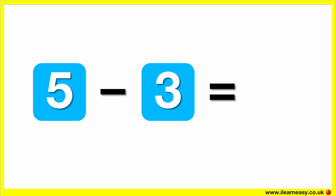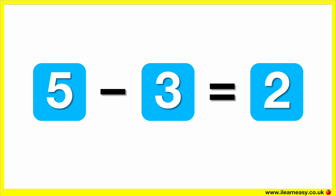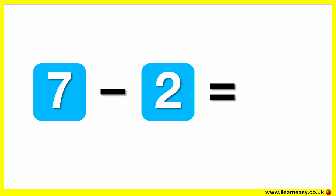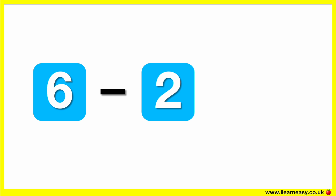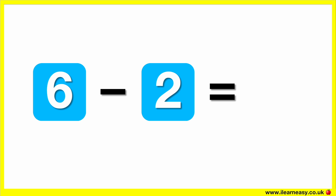What is three minus two? The correct answer is two. What is five minus three? Five minus three equals two. What is 7 minus 2? The correct answer is 5. 7 minus 2 equals 5. What is 6 minus 2? The correct answer is 4. 6 minus 2 equals 4.